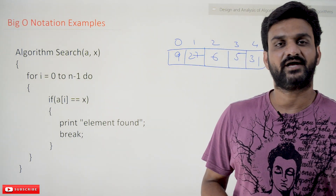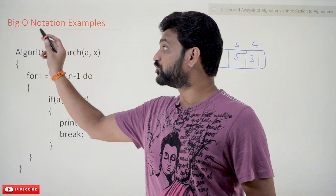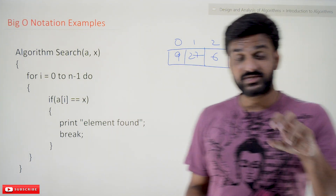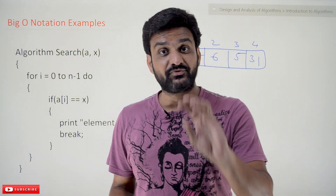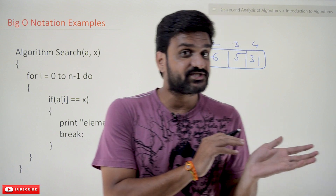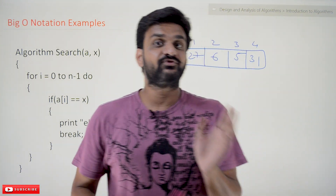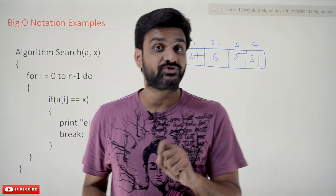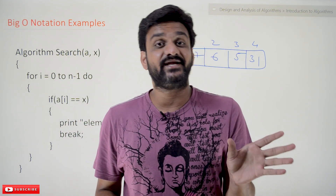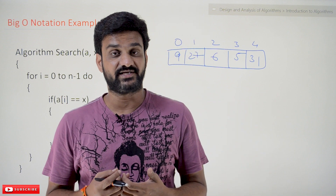Hi, welcome to LearningMonkey. I am Vikram. In this class, we will try to understand Big O notation examples. The mathematical concepts related to Big O notation and the definition of asymptotic notation have already been explained in our previous videos. If you haven't watched those videos, please watch those videos and come back here, because without understanding those videos, you may not be able to understand what we are going to discuss in this class.